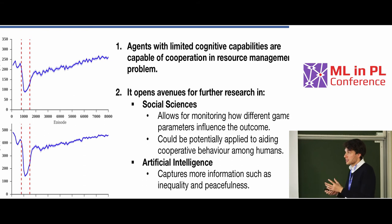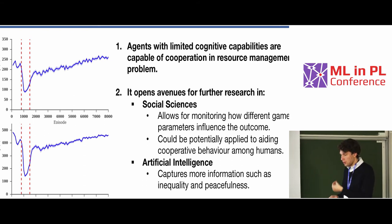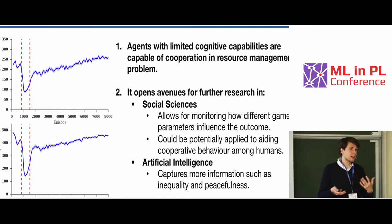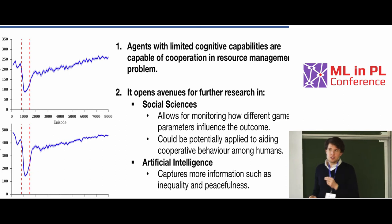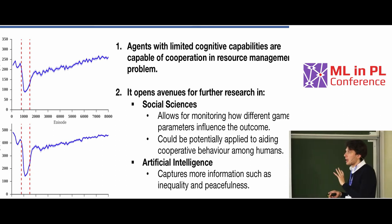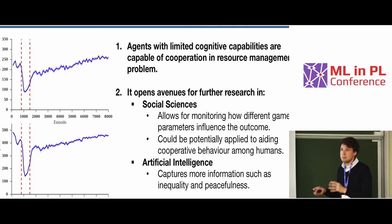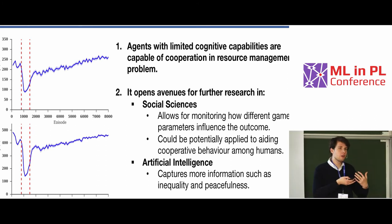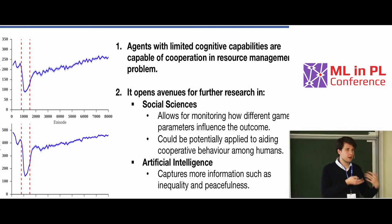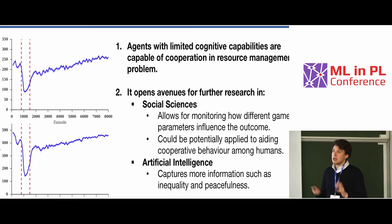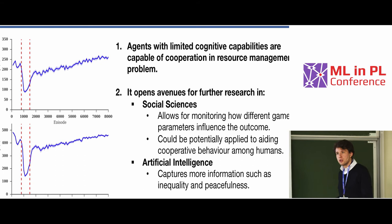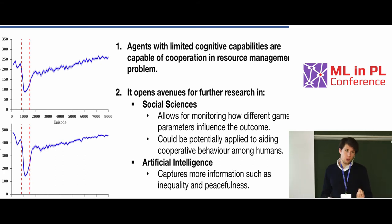And for AI — specifically for reinforcement learning — what was really interesting from the perspective of somebody who has done a lot of single-agent RL, is that this showed way more information, such as inequality and peacefulness, and really uncovered more about the algorithm itself. If we apply different algorithms, the outcome might be the same, but how they go about achieving it is quite different, actually.